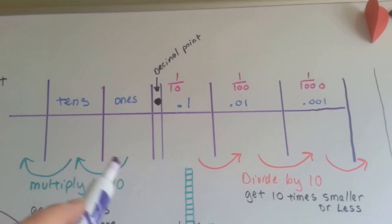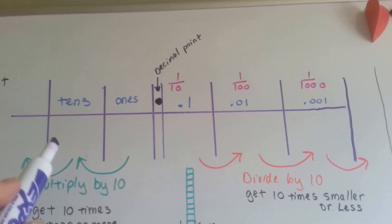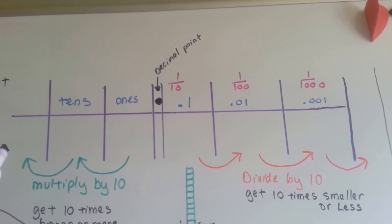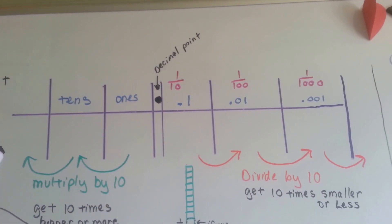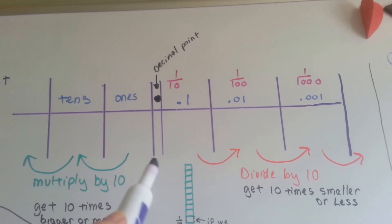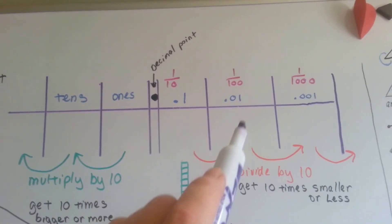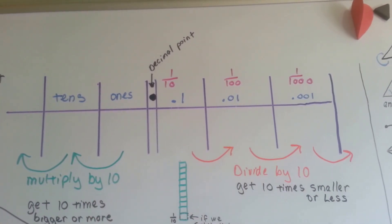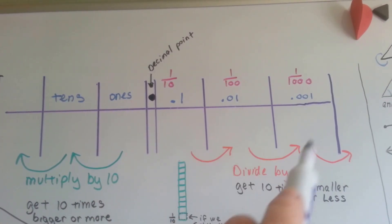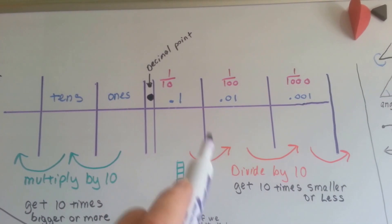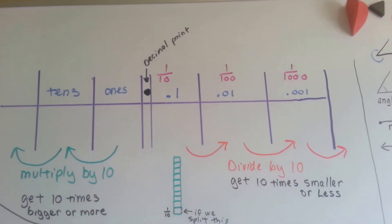As we move to the left, we multiply by ten and get ten times bigger or more. As we divide by ten, we get ten times smaller or less — one tenth of.